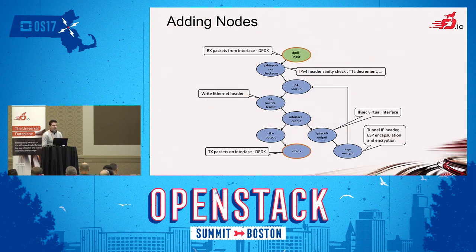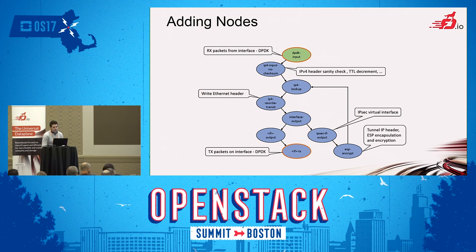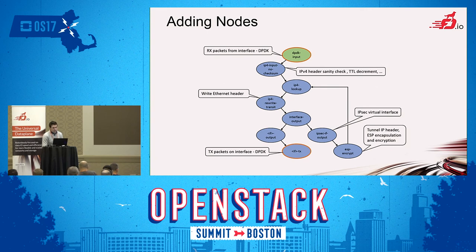Now I'll go through the example: the work I did integrating the Cryptodev DPDK API, which is a crypto API for the IPsec implementation that VPP already had. The idea was to modify the DPDK plugin and create new nodes, rearranging the graph to take advantage of them. The default path for normal IP packets getting encrypted starts with a vector from the DPDK input node. Because the NIC recognizes them as IP packets, it goes directly to the IP4 input no-checksum node — there's basic IPv4 header sanity checking and TTL decrement — then to the FIB.